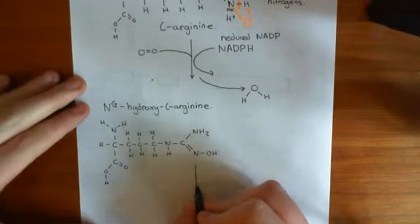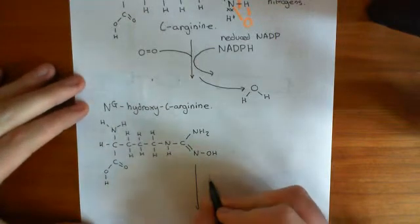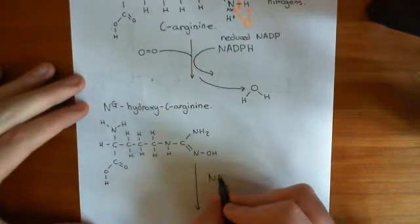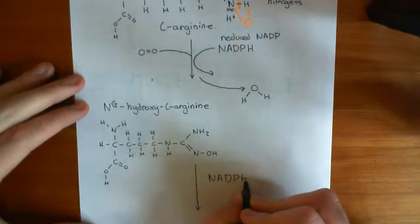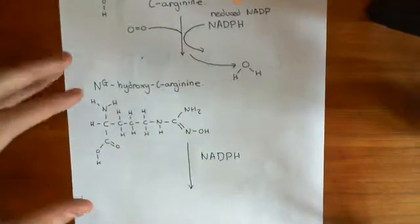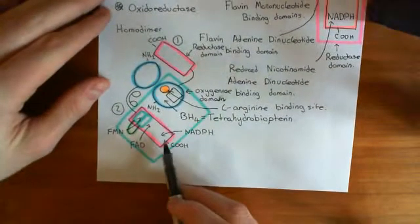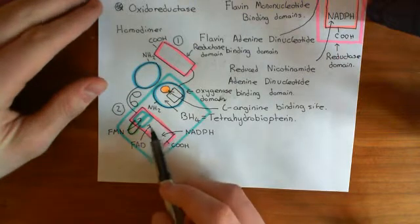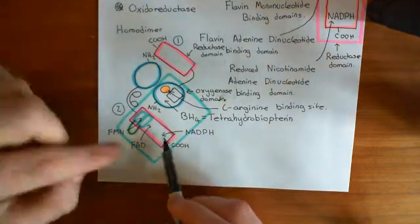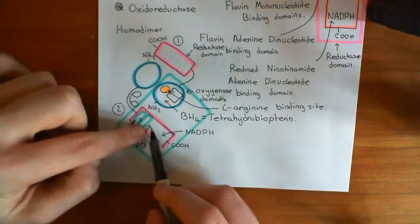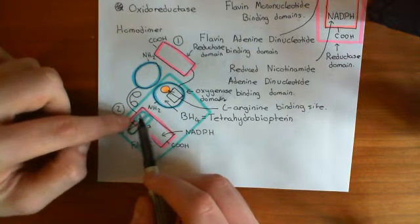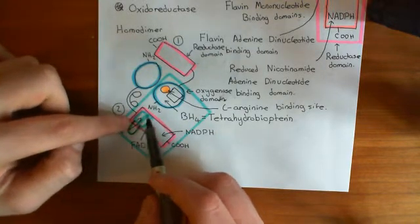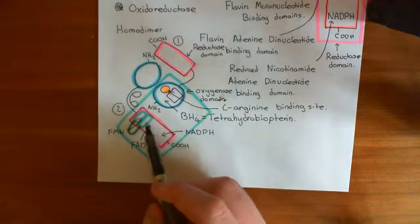Now, what's going to happen is that another reduced NADP molecule is going to come and bind to this NADP binding site down here. It's going to, this time, only give one electron. This electron is going to move again to the flavin adenine dinucleotide, then to the flavin mononucleotide, which is bound to this flavin mononucleotide binding domain.